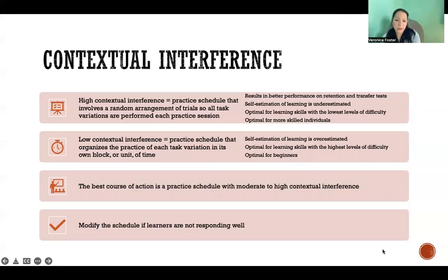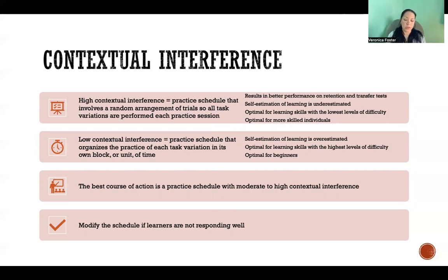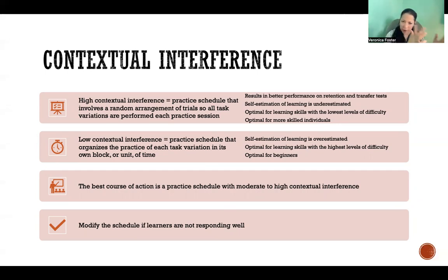High contextual interference means a practice schedule with a random arrangement of trials, practicing all different task variations during one practice session. The other end of the spectrum is low contextual interference — a practice schedule that organizes the practice of each task variation in its own block or unit of time. Of course, practice schedules can fall anywhere in between, such as some days being low contextual interference focused on one skill, while other sessions have high contextual interference with a random variety of trials.